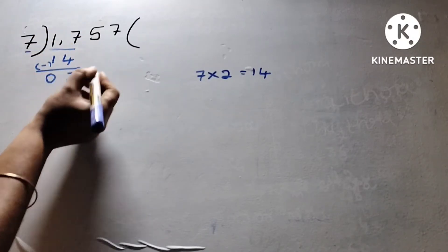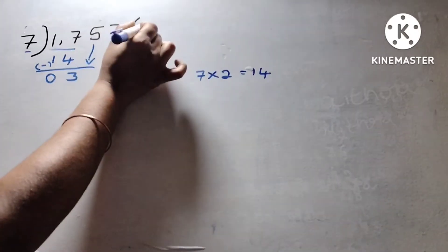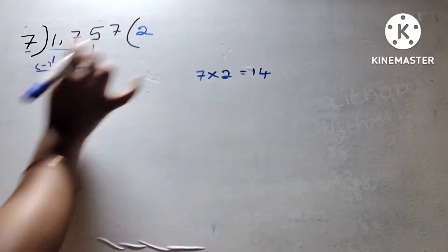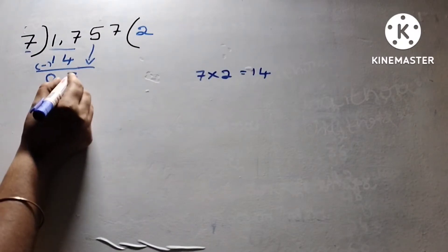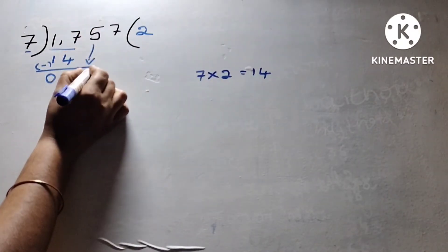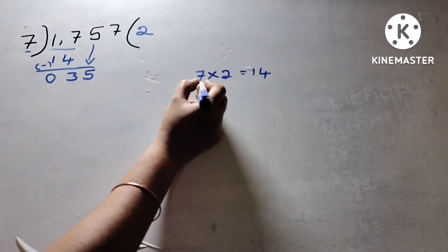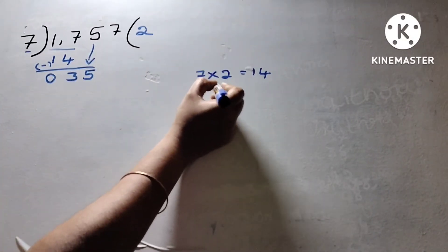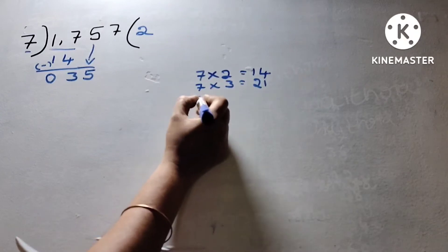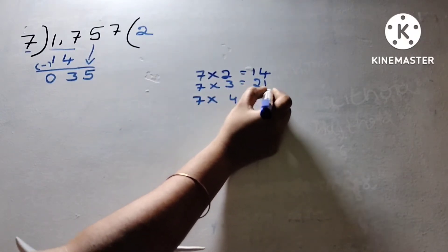Next digit is 5. 7 into 3 is 21. 7 into 4 is 28.